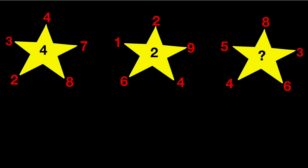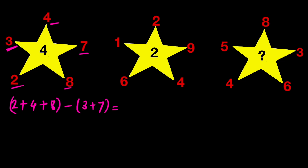If you add the even numbers in the first star — 2 plus 4 plus 8 — and then subtract the sum of the odd numbers, we get 14 minus 10, which equals 4. And that is the central number of the first star shape.